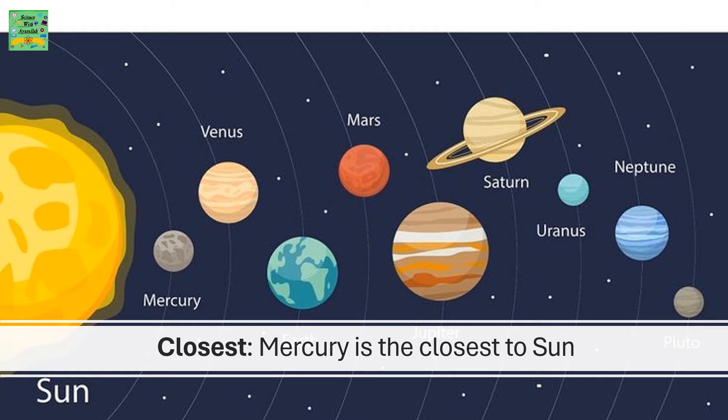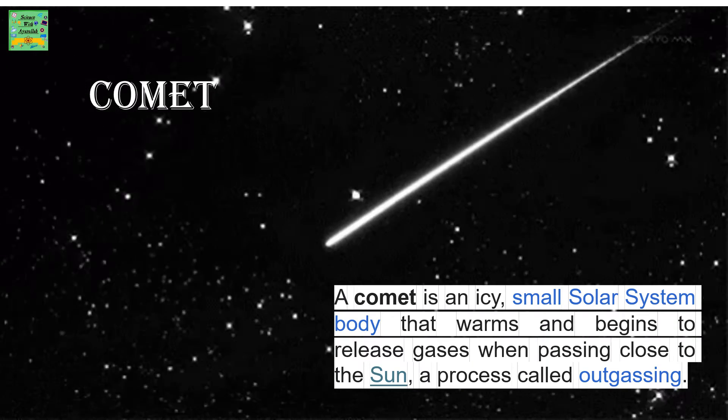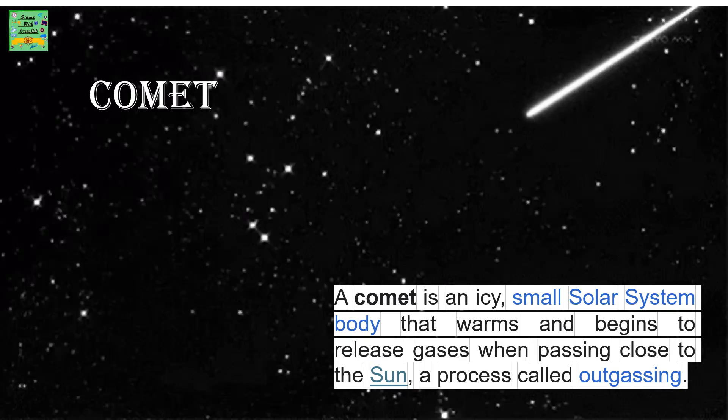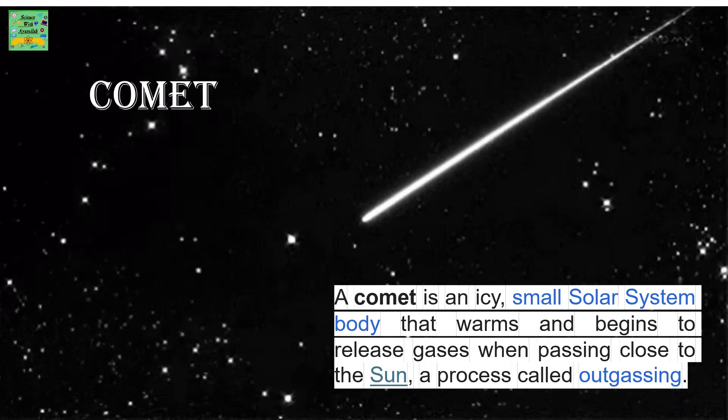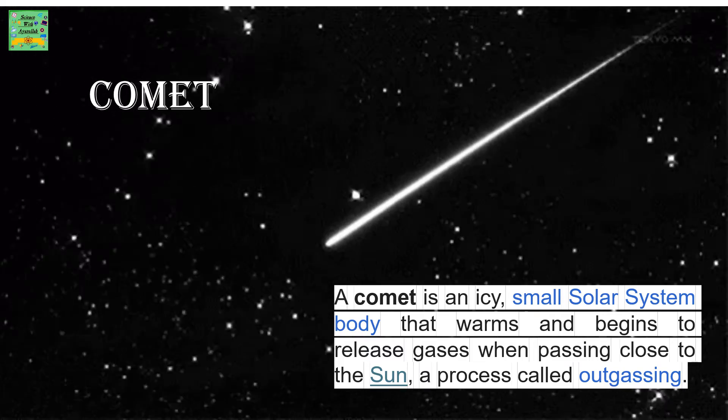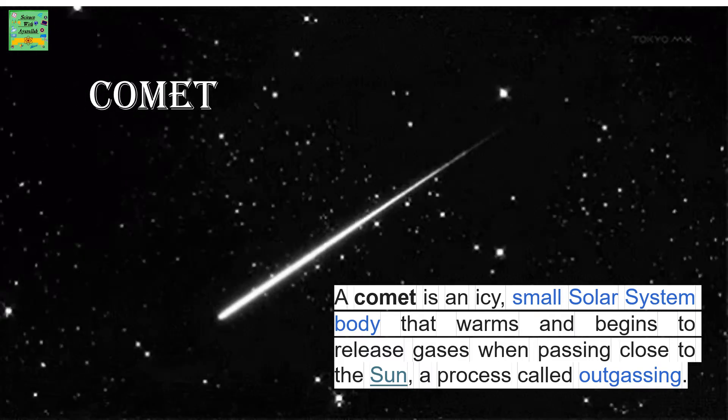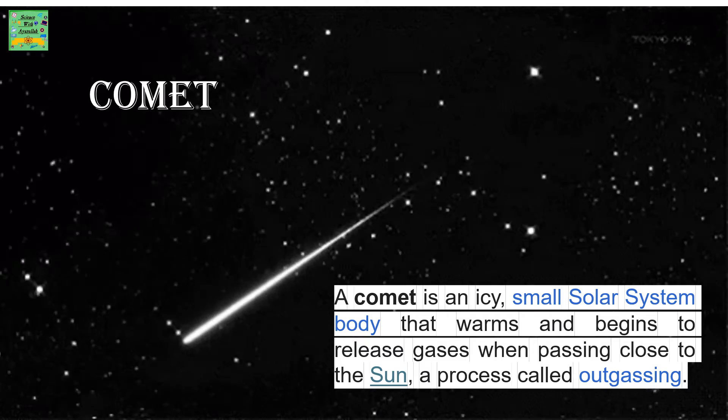Closest: Mercury is the closest planet to the sun. Comet: A comet is an icy, small solar system body that warms and begins to release gases when passing close to the sun, a process called outgassing.